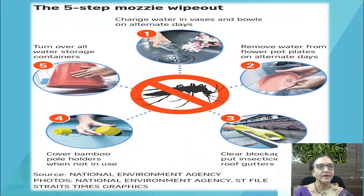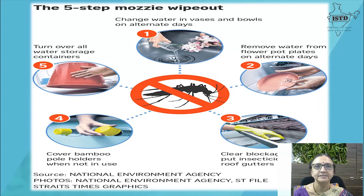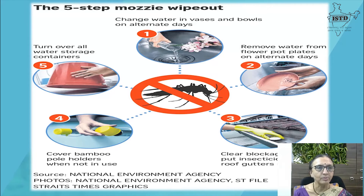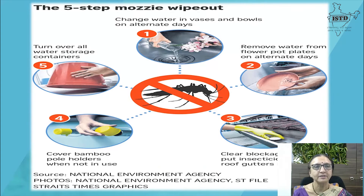The five-step MOSI wipeout to prevent mosquito-borne diseases: change water in vases and bowls on alternate days, remove water from flower pot plates on alternate days, clear blockages on roofs or gutters, cover bamboo pole holders when not in use, and turn over all water storage containers. This can help prevent dengue and malaria.